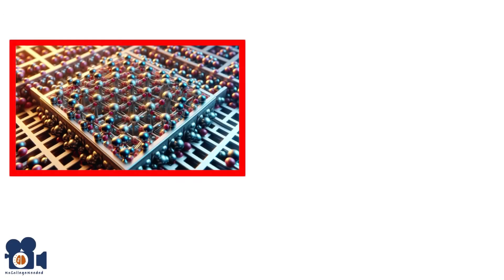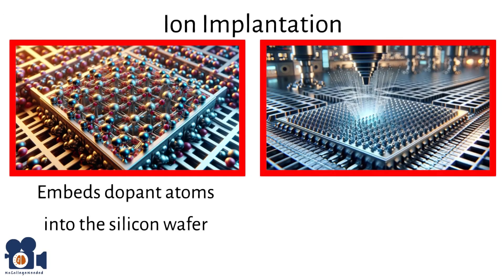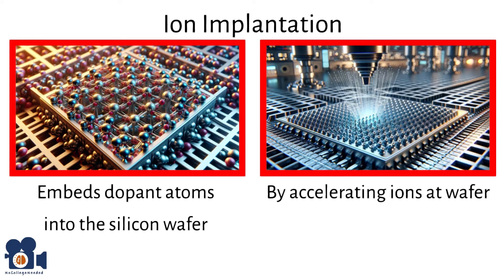Next is ion implantation, which embeds dopant atoms into the silicon wafer by accelerating ions and directing them at the wafer, embedding them into the silicon lattice. This modifies the electrical properties of specific regions, creating p-type and n-type properties. After implantation, the wafer is annealed — heated — to repair damage to the crystal structure and activate the dopants.